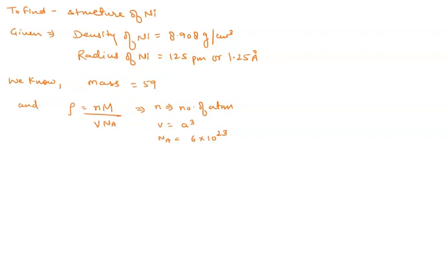So let us assume that this structure is FCC structure. We can assume that for FCC structure, we know that A is equal to 2 by root 2R. So from this equation, let us suppose this is equation 1.